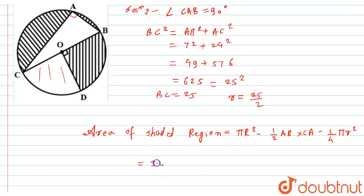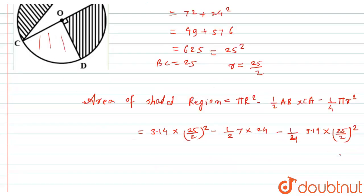The value of π is given to us 3.14 into R we have calculated 25/2 bracket squared minus 1/2, AB is given to us 7 and CA is 24, minus 1/4, 3.14 into R is given to us 25/2 bracket squared.